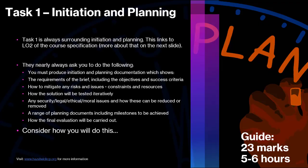Task one is always initiation and planning — the beginning of the project life cycle. It links to LO2 of the course specification. They will nearly always ask you to produce initiation and planning documentation including a brief, some objectives, and some success criteria. It will also ask you to think about any risks that may need mitigating and any constraints you may have in completing this project.